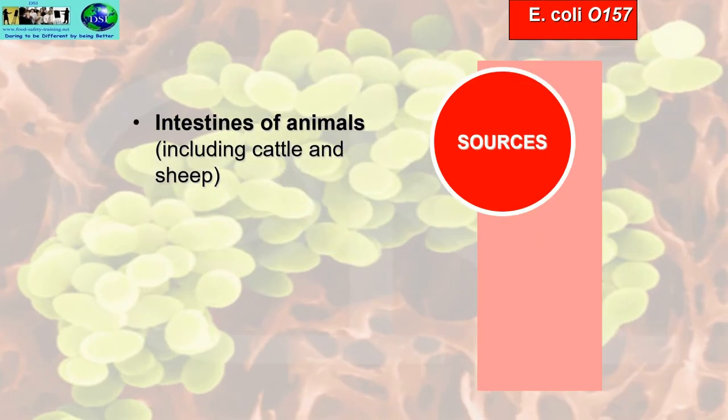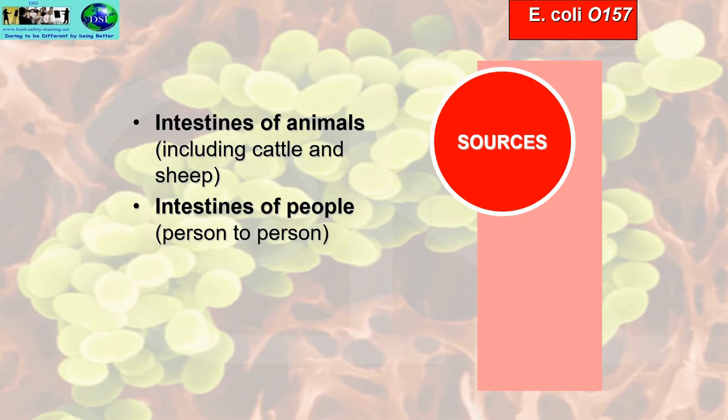Sources of E. coli O157 include the intestines of animals including cattle and sheep, and the intestines of people — person-to-person contamination is quite common. Drinking water and bathing water are also sources.